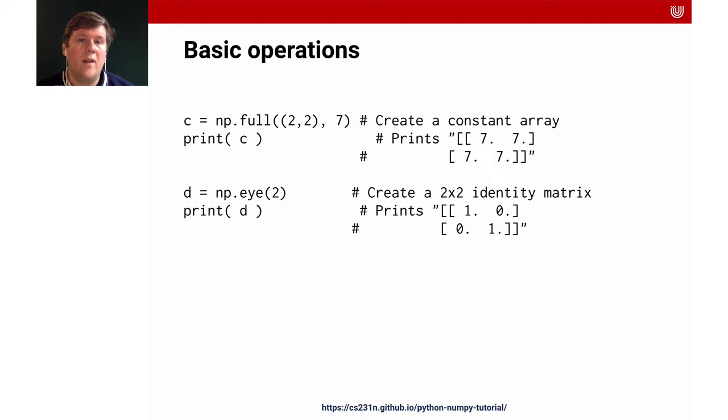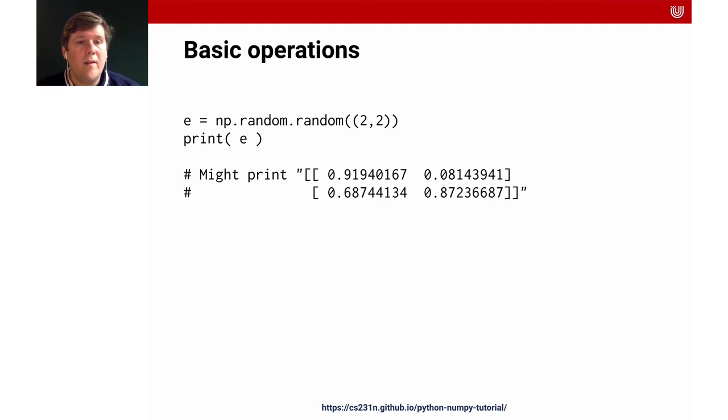You can also get a constant array with a certain number with the numpy dot full command and you can get an identity matrix with the command numpy dot i and then you just tell it one parameter and that is the dimensionality. So if you do numpy dot i two you get a 2 times 2 identity matrix. You can get random numbers through the random number generator in numpy. That's numpy dot random dot random and you give it a dimensionality. Here we give it 2 comma 2 which gives us the 2 times 2 array with random numbers between 0 and 1.